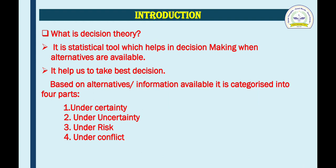What is decision theory? Decision theory is a statistical tool which helps in decision making when alternatives are available. It helps us to take the best possible decision. When we are provided certain information, then only we take a decision. This statistical tool is decision theory.